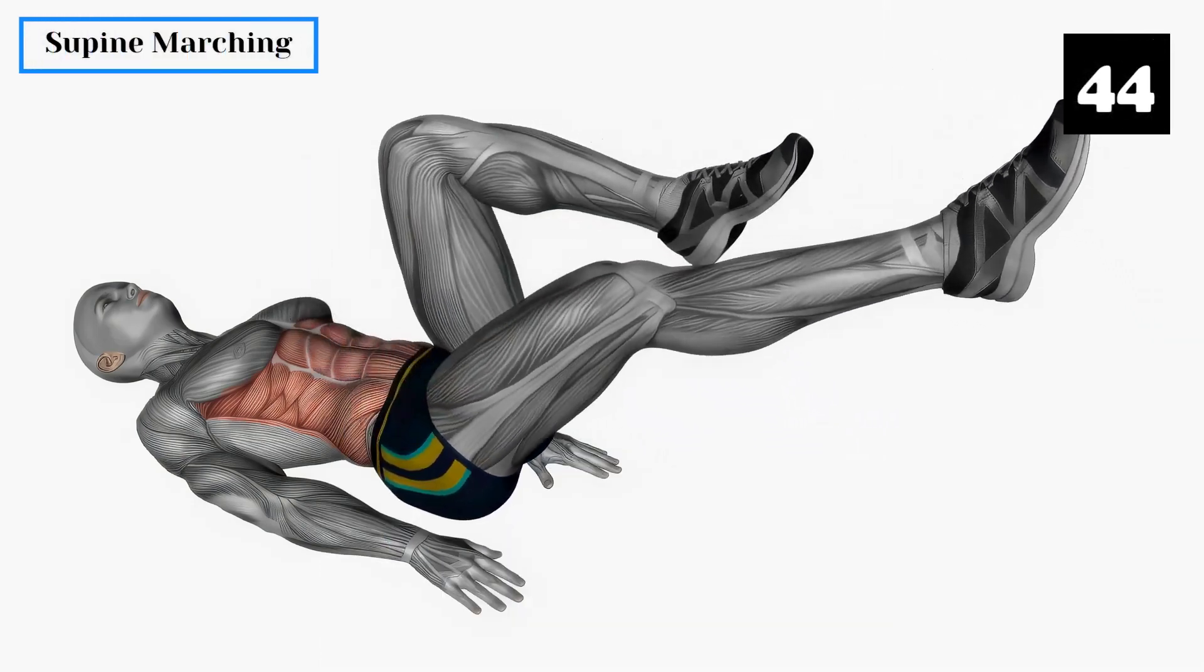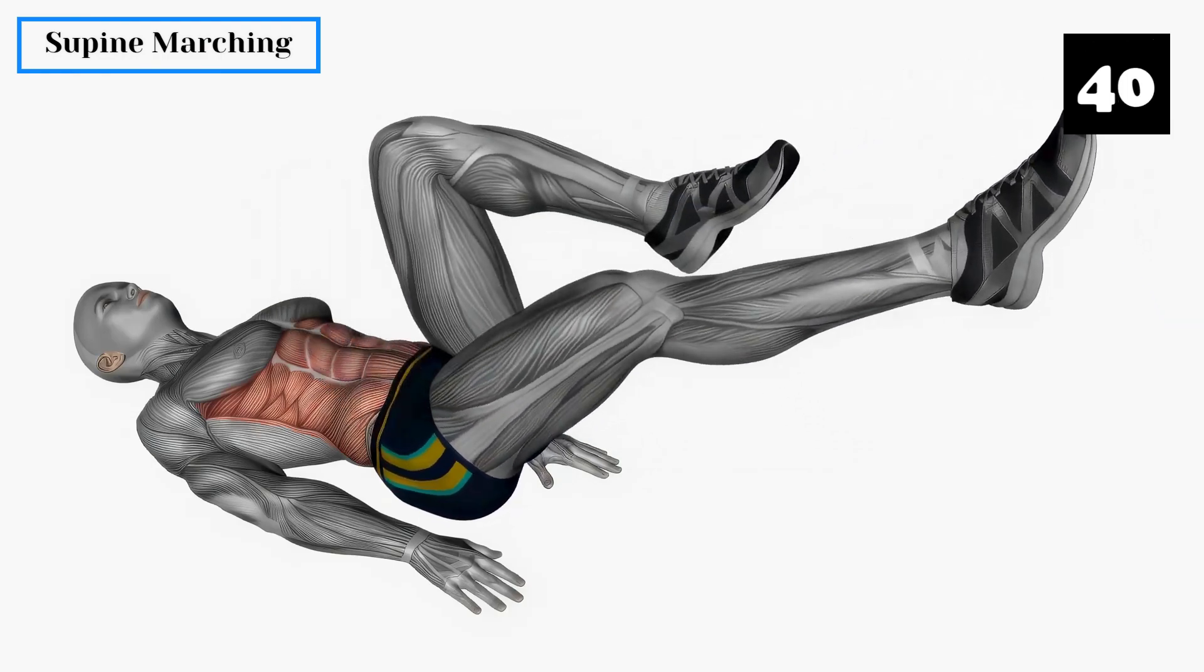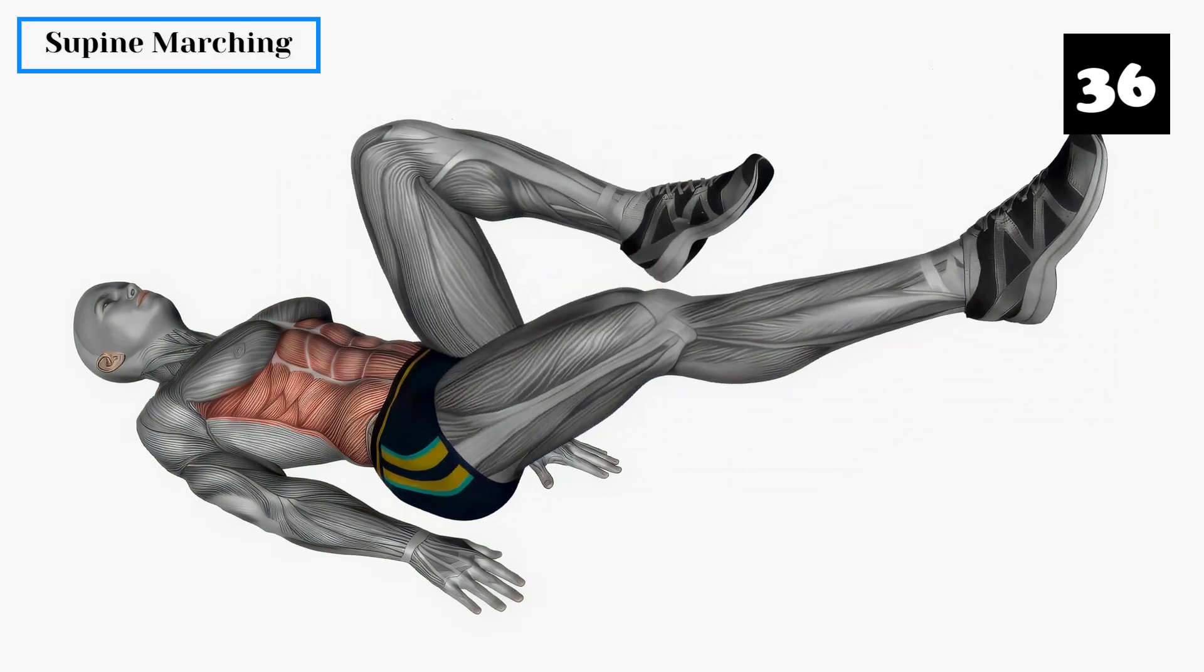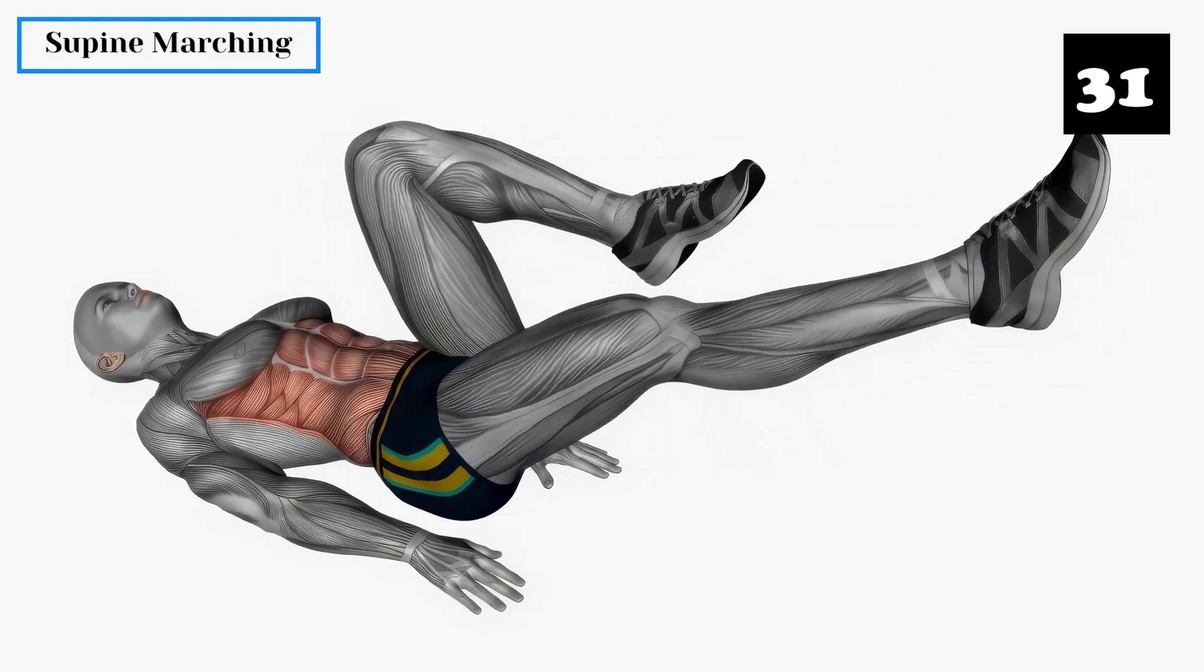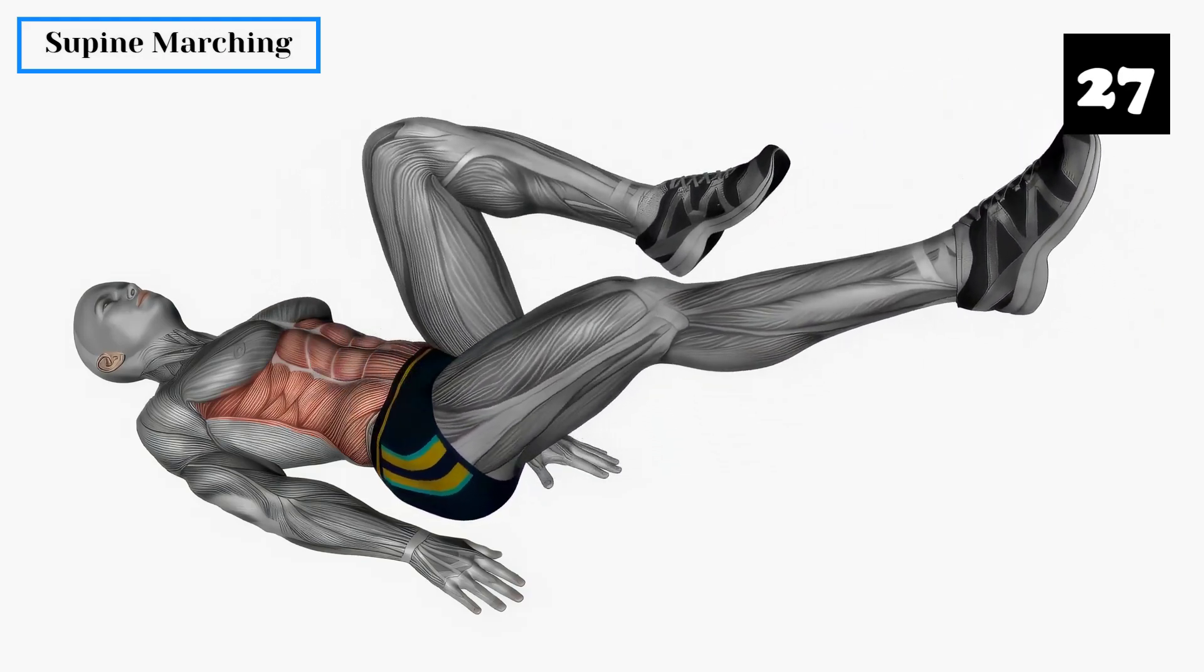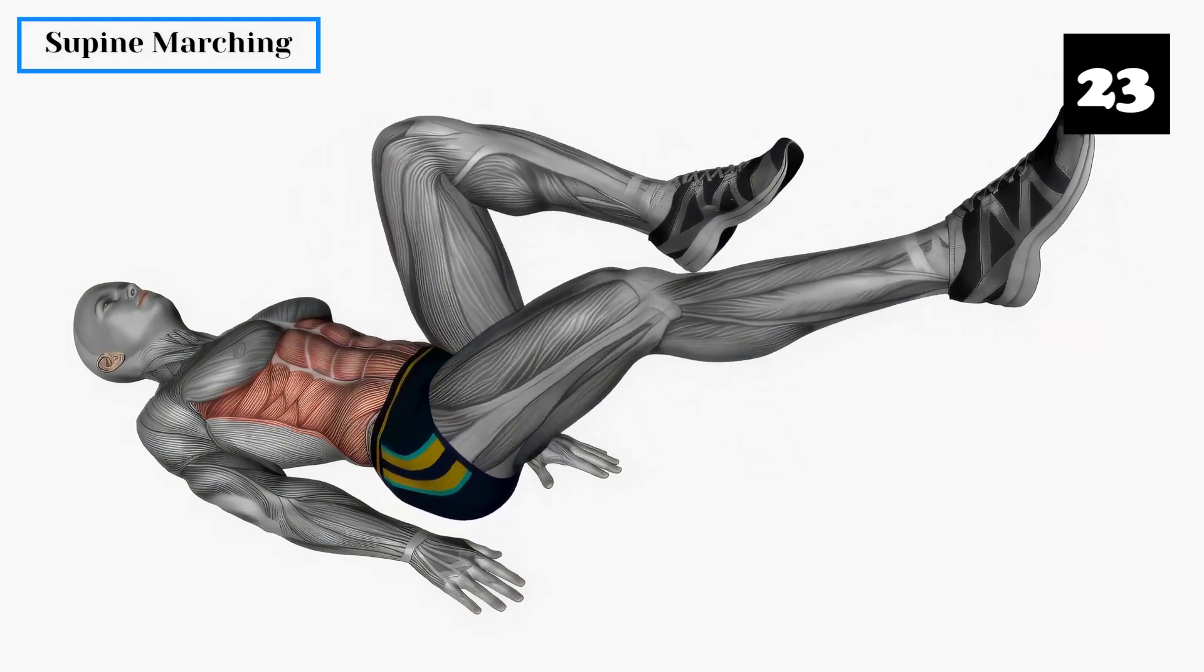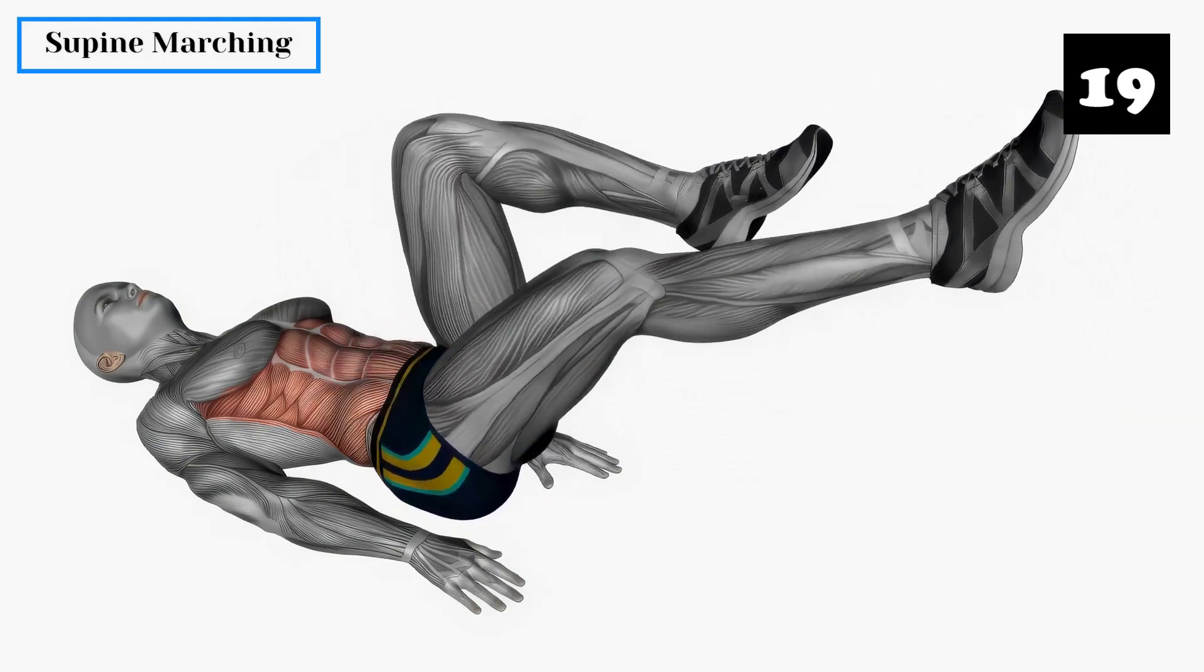Exercise 6: Supine Marching. Supine marching works the pelvic floor muscles and increases blood flow to the groin area. Lie on your back, bend your knees and keep your feet flat on the floor. Lift one leg at a time, bringing the knee towards your chest and then lower it back down. Alternate between legs in a marching motion. Repeat this exercise for a set of 10 marches per leg.